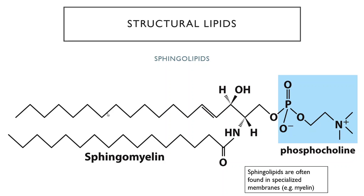Sphingomyelin is structurally very similar to phosphatidylcholine because it has that same phosphocholine head group. But sphingolipids — this particular sphingolipid — are found in specialized membranes with special functional properties. For example, in animals, sphingomyelin is found in myelin cells, which are the cells that insulate axons in the nervous system.